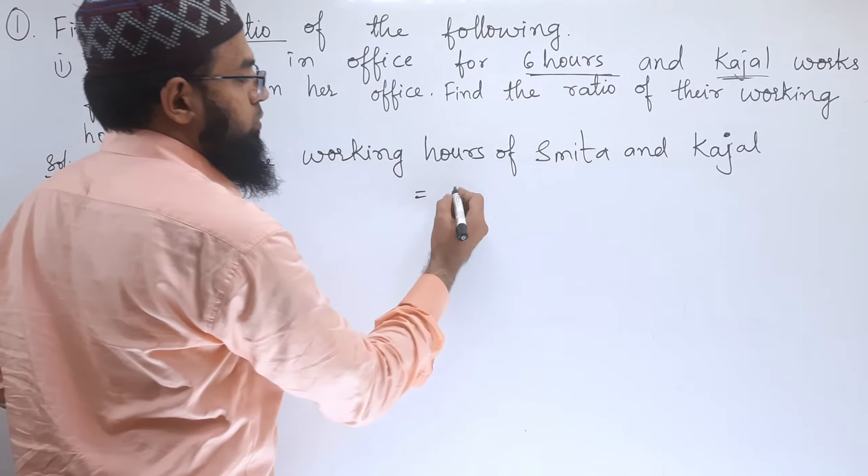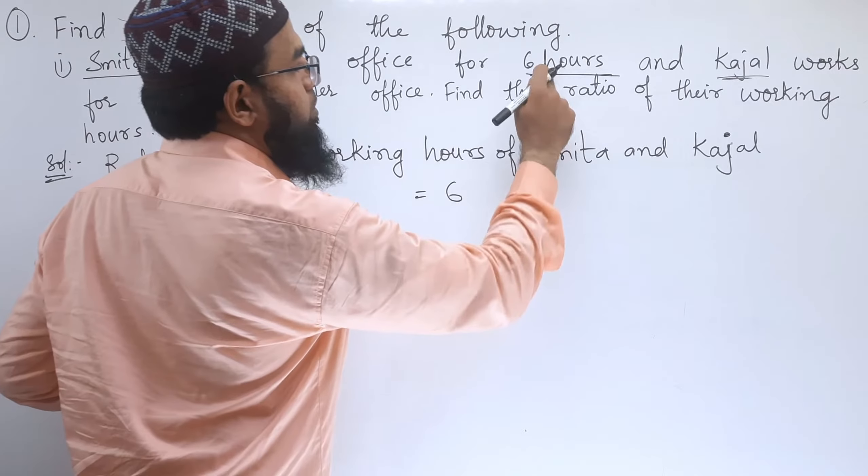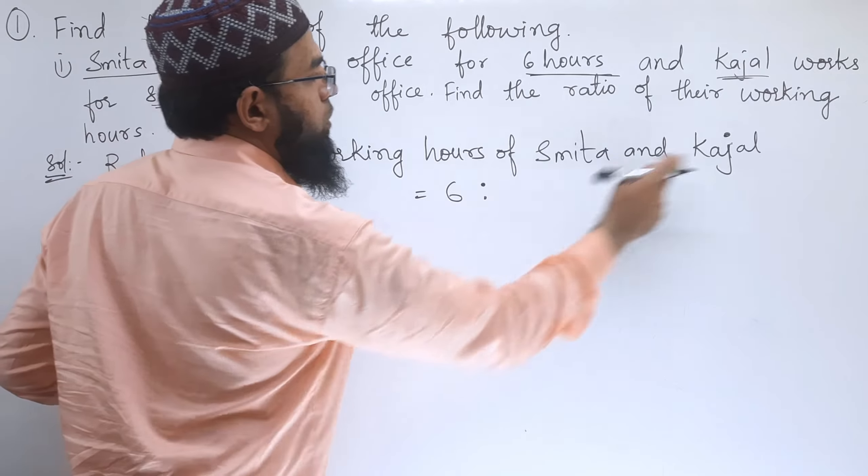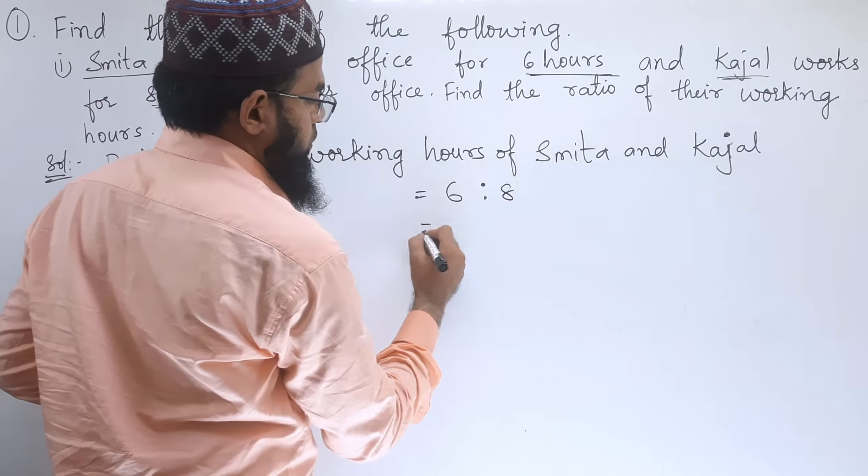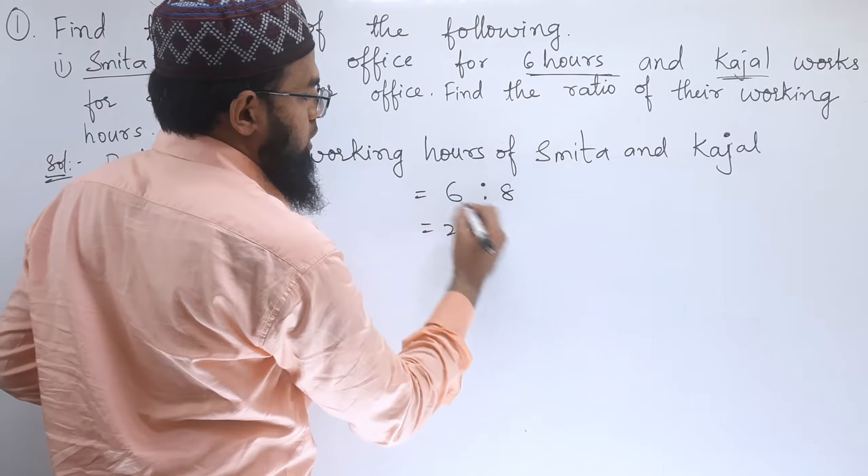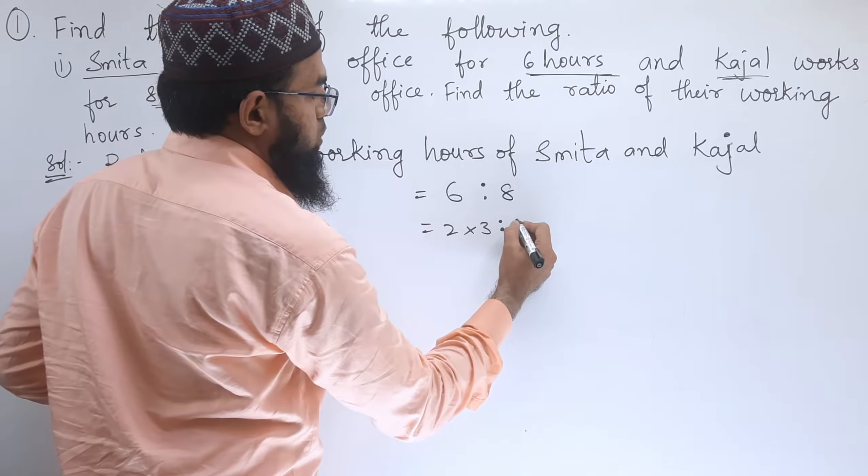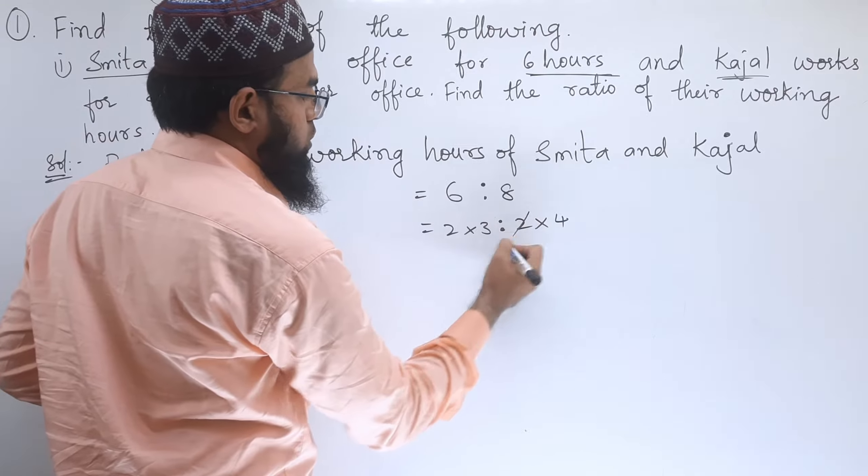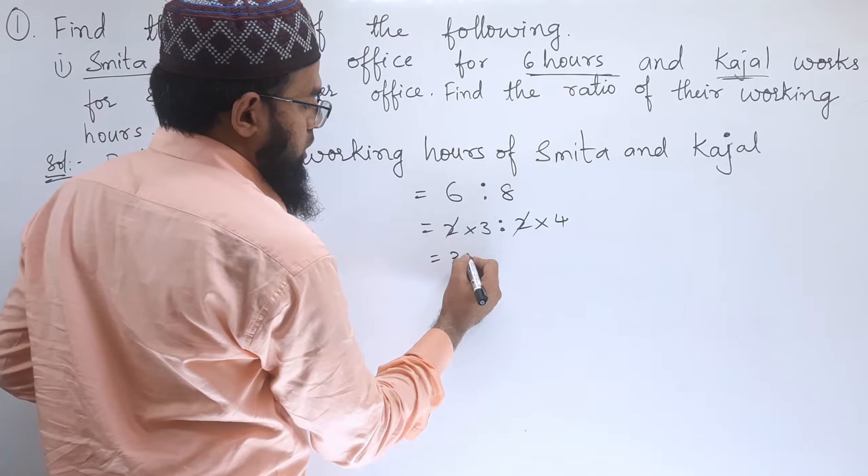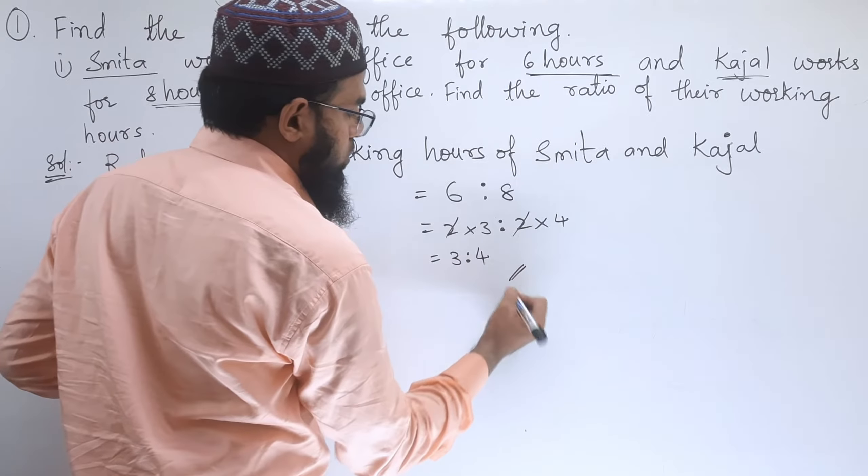Is equal to, for Smita time is 6, for Kajal is 8. 2 times 3 is 6, 2 times 4 is 8, 2-2 cancel, 3 is to 4. So this is the ratio.